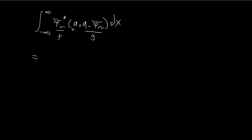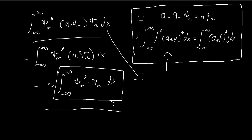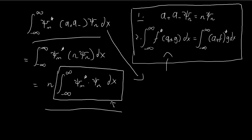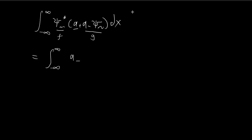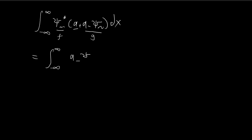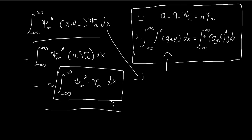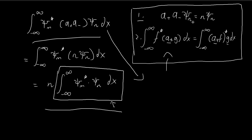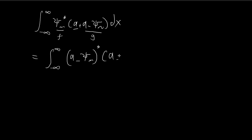And then we have the a-plus operator. According to this formula, I can rewrite the left-hand side as the right-hand side. So I can take — since this is plus, this will become minus. In our case we have a-plus, so it becomes a-minus applied to our function f. In this case, f is ξ_m. Then we take the entire conjugate and multiply by g. In our case, g is a-minus ξ_n dx.